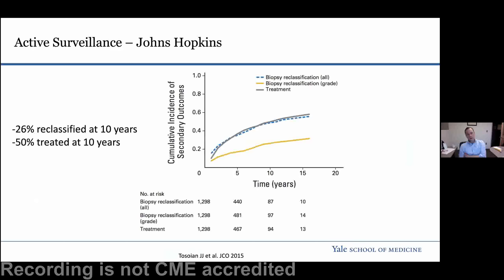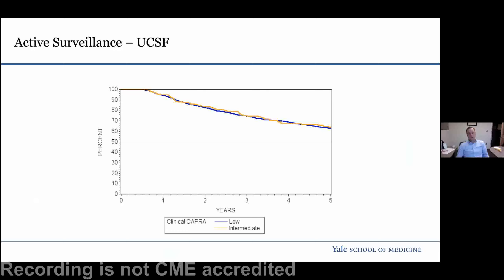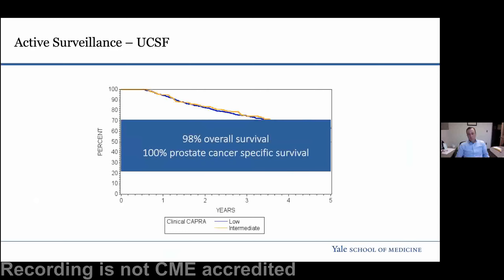Data from Hopkins also shows a very favorable trend — 26% reclassified at 10 years, 50% at 10 years. Data from UCSF showing a similar trend — 100% prostate cancer-specific survival and 98% overall survival. What all of these studies share is that the median follow-up rarely exceeds 10 years, partially because of the novelty of the approach. These are also carefully selected patients, enriched for better socioeconomic status, interest and willingness to attend follow-up, and low attrition. So the question becomes: how generalizable is that, and can we see that everywhere?